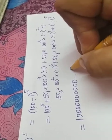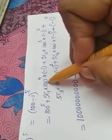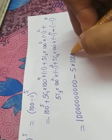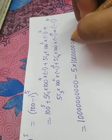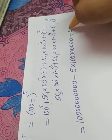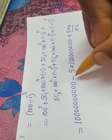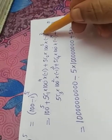So you have to write 1 and 8 zeros. Plus 5c2 is 5 into 4 by 1 into 2. Plus positive, negative, positive. Otherwise, minus 1 square gives you positive.